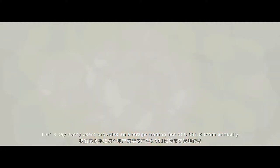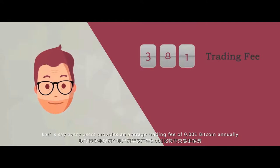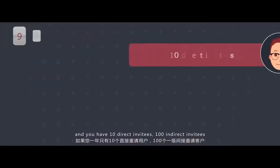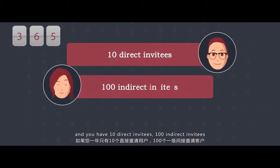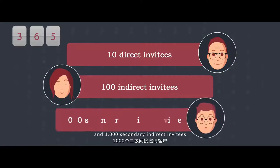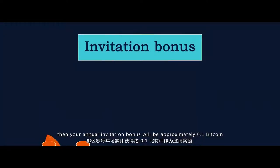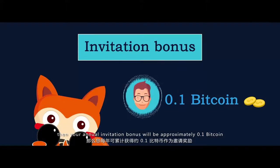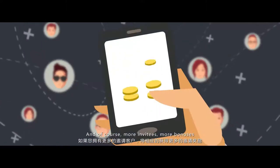Then you should get 10 direct invitees, 100 indirect invitees, and 1,000 secondary indirect invitees in 30 days. Let's say every user provides an average trading fee of 0.001 Bitcoin annually. With 10 direct invitees, 100 indirect invitees, and 1,000 secondary indirect invitees, your annual invitation bonus will be approximately 0.1 Bitcoin. More invitees, more bonuses.